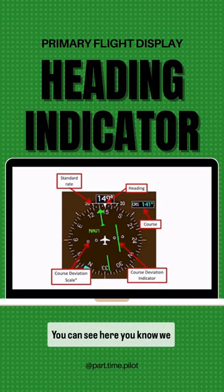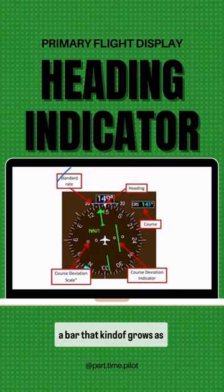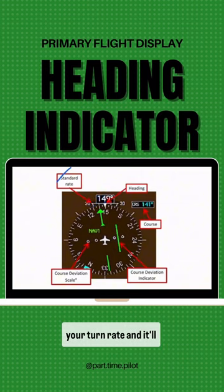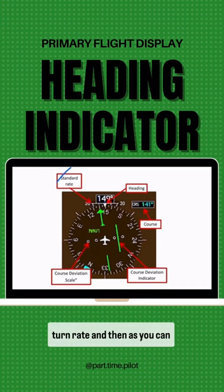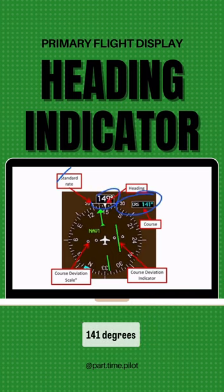You can see here we have the standard rate pointed out up here on this scale. Your turn rate is going to be like a bar that grows as you increase your turn rate or shrinks as you decrease it, and it'll align with that standard turn rate when you have a standard rate turn. Then, as you can see under this white triangle right up here, we have our heading which is 149, and we also list our course of 141 degrees.